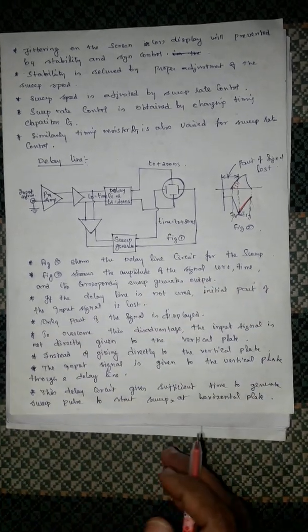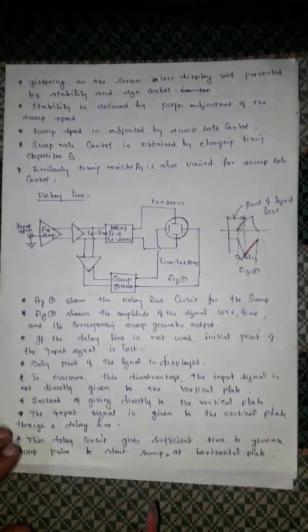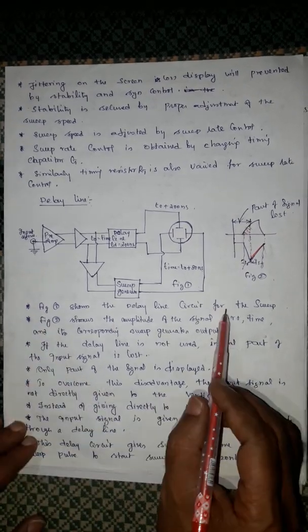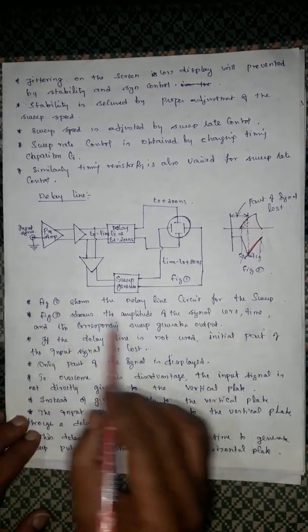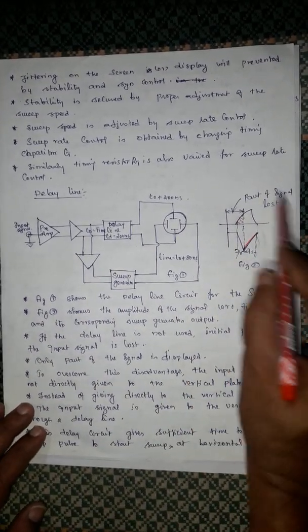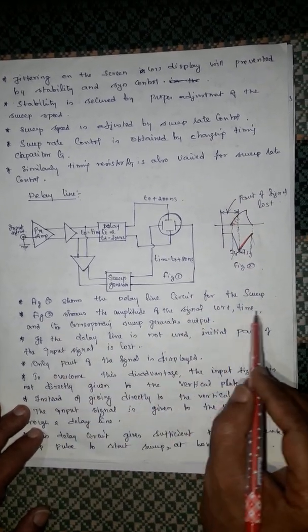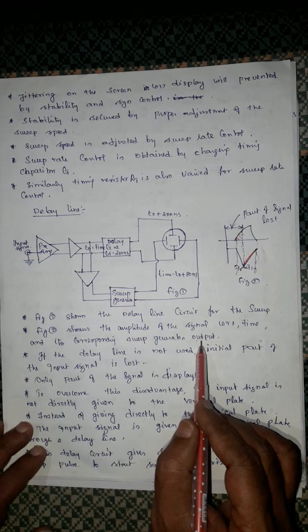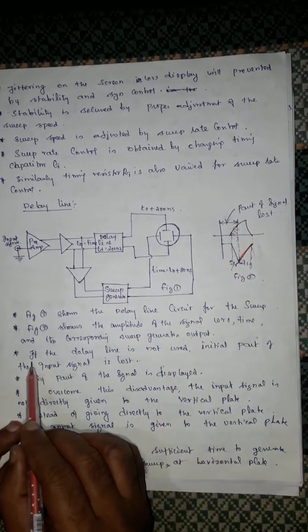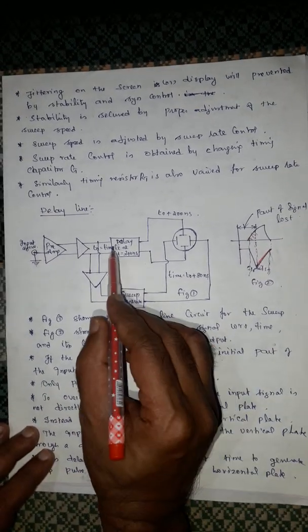This is the basic idea. Let's see how it is working. Figure one shows the delay line circuit. Figure two shows the corresponding signal loss, showing the amplitude of the signal over time and corresponding sweep generator output.